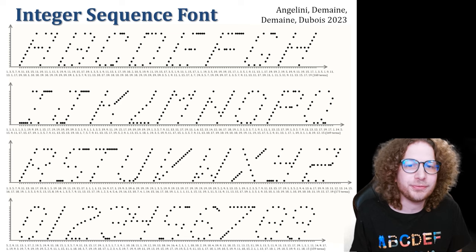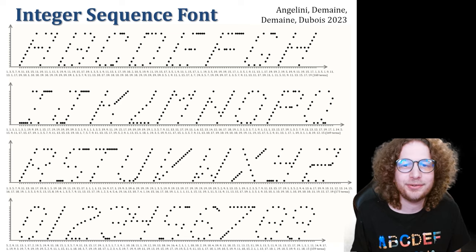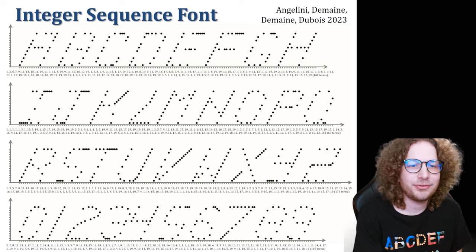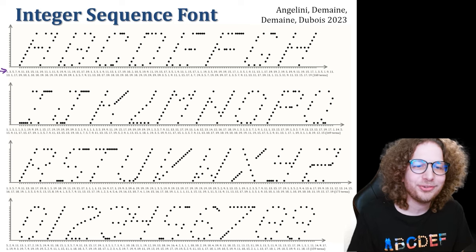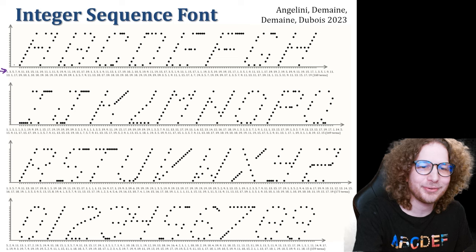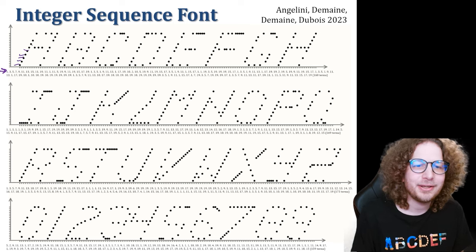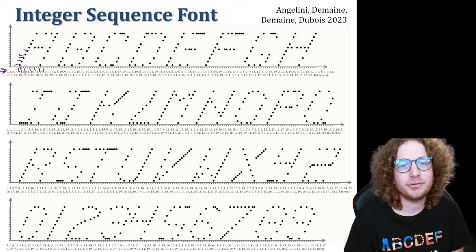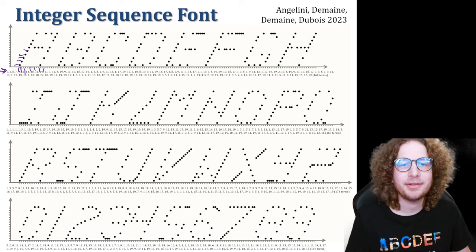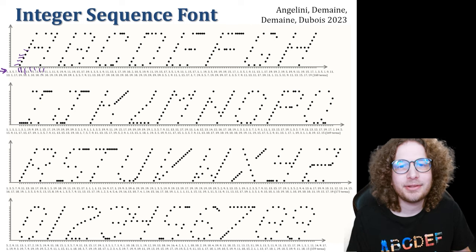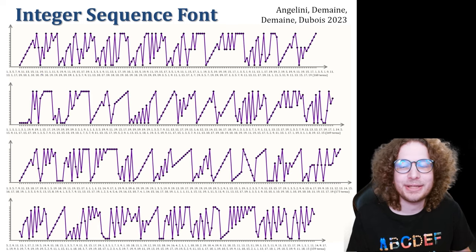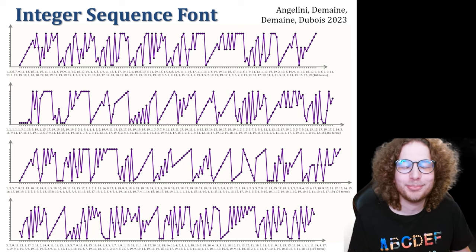Our most recent font is an integer sequence font — a way to write letters and numbers with a sequence of integers. The sequence one, three, five, seven, nine corresponds to y-coordinates: at every x-coordinate we provide one y-coordinate that gives you a letter. Because they're written in an italicized way, you can write one letter after another and they separate. This is a function with a value at every integer, and when you actually plot the function, the text becomes completely unreadable.